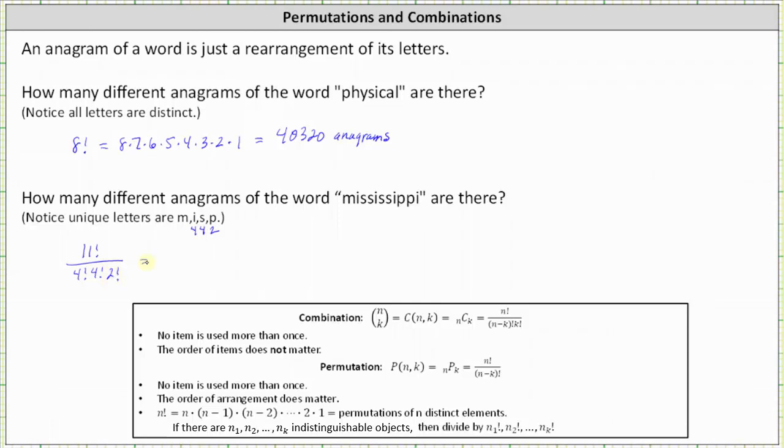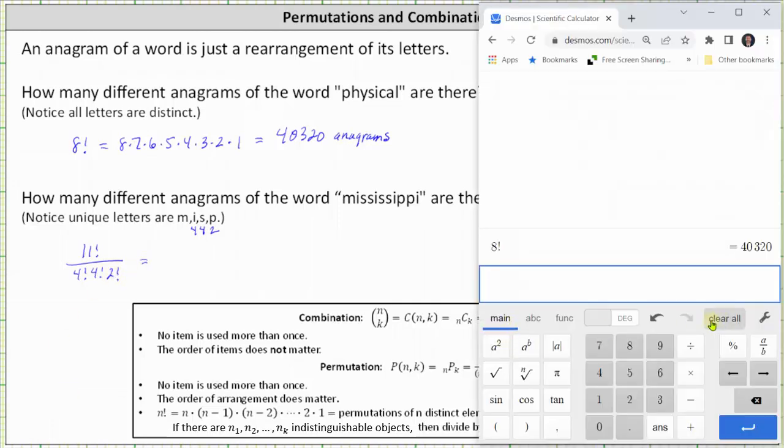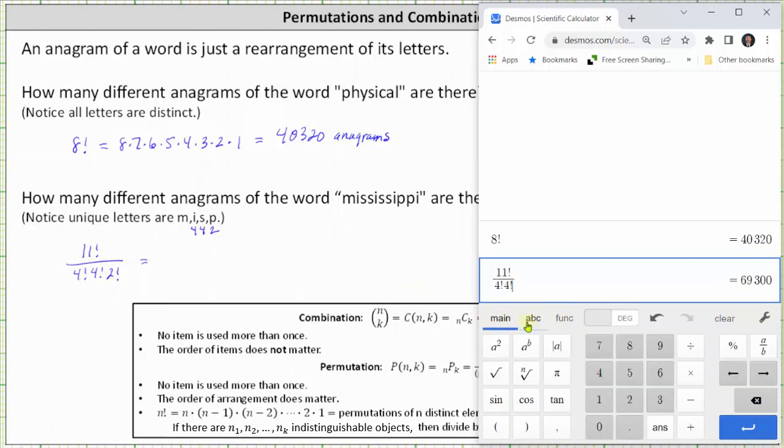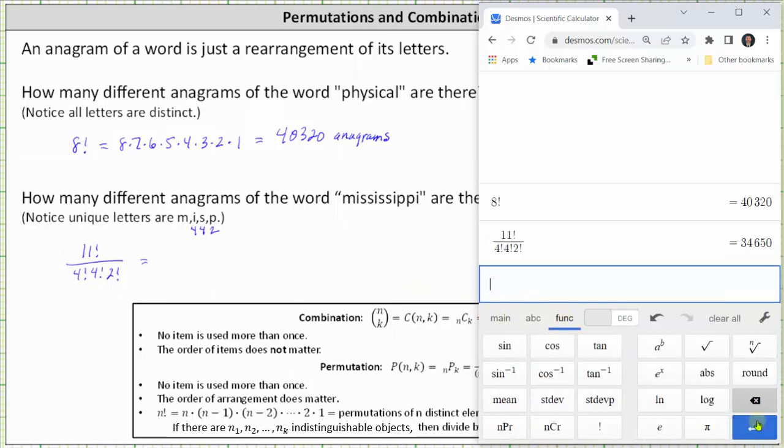And now let's go to the calculator. From the main menu, I'll click on the fraction format. Enter 11 factorial in the numerator. In the denominator, we have four factorial times four factorial times two factorial. The word Mississippi has 34,650 anagrams.